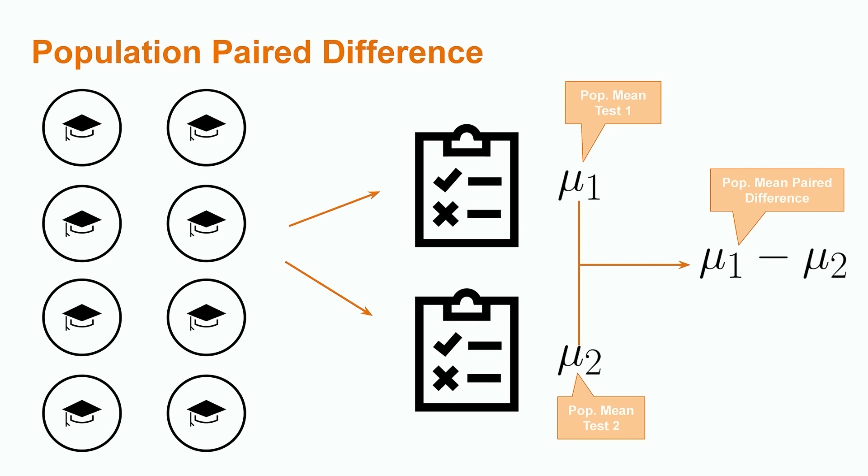For example, a teacher might want to see a general upward trend in the students' grades over the course of the term. The population paired difference could tell whether students, in aggregate, improve their test scores between the first and second exams. Let's see how one can construct a confidence interval for this type of observation by first reviewing the general structure of confidence intervals.